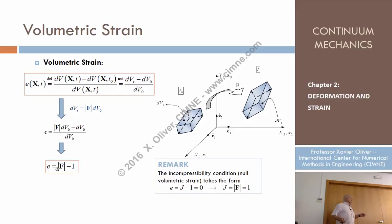The volumetric strain, the increment of volume per unit of volume, is just the determinant of f minus 1.